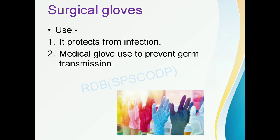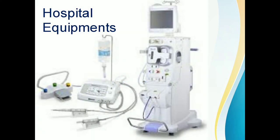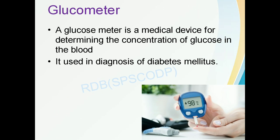Next is hospital equipment — equipment used in hospitals for easy diagnosis and treatment of patients. The first is the glucometer. It is a medical device used for determining the concentration of glucose in the blood and used in the diagnosis of diabetes mellitus. The glucometer measures blood glucose concentration to check whether blood sugar levels are normal or indicate diabetes.